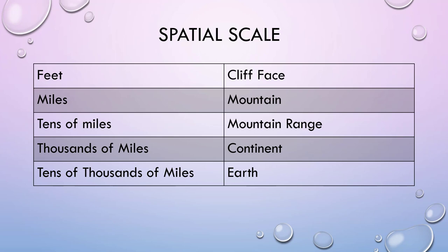A similar thing applies to a spatial scale. If I'm using feet, I'm probably looking at something small like a cliff face. If I'm using miles, I'm looking at something like a mountain. Tens of miles is a mountain range. Thousands of miles is going to be a continent or maybe an ocean. Tens of thousands of miles — it's going to be the Earth. These are important things to know because they make it easier to relate things to each other.